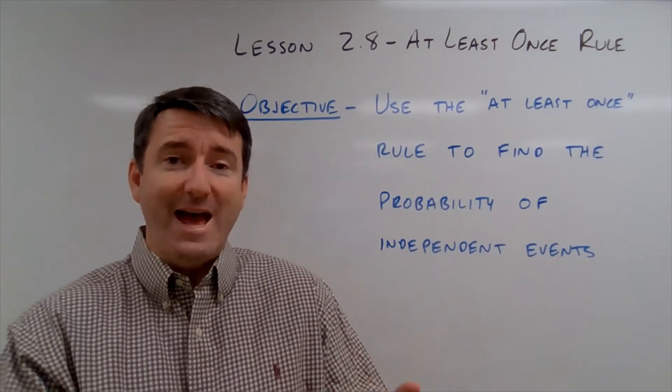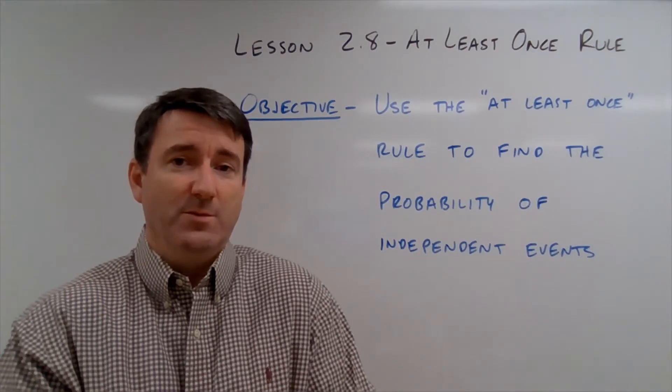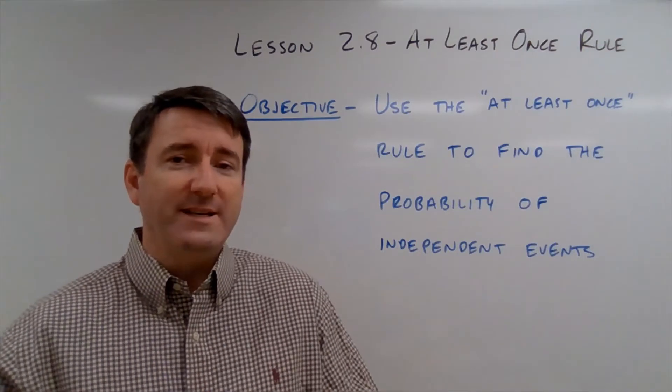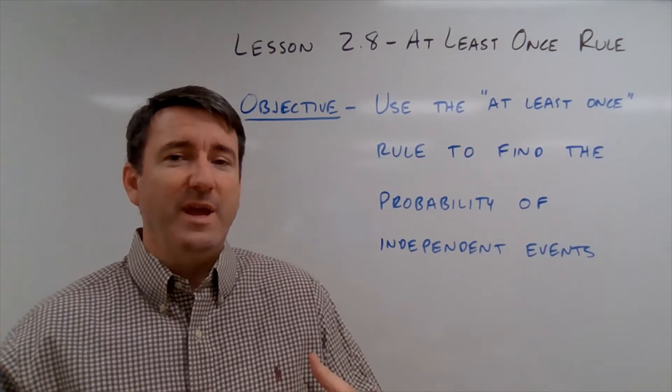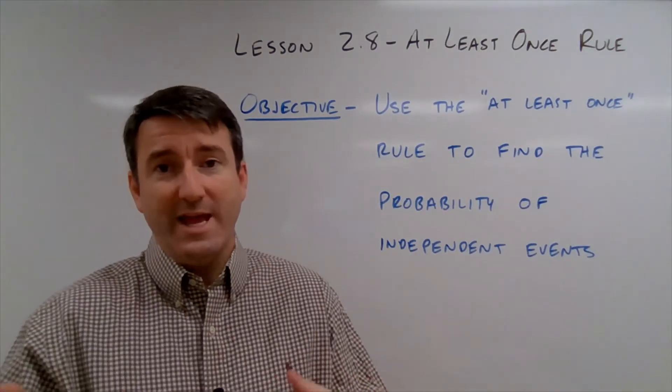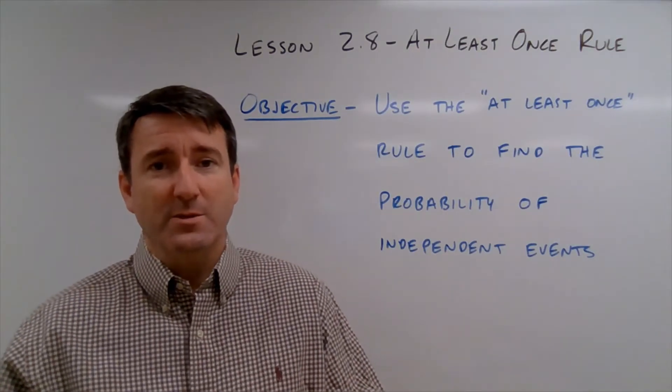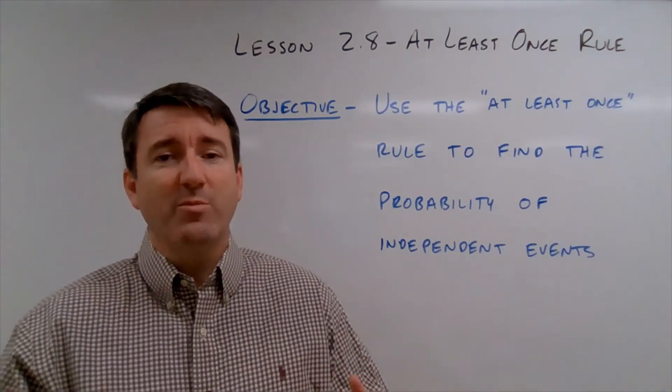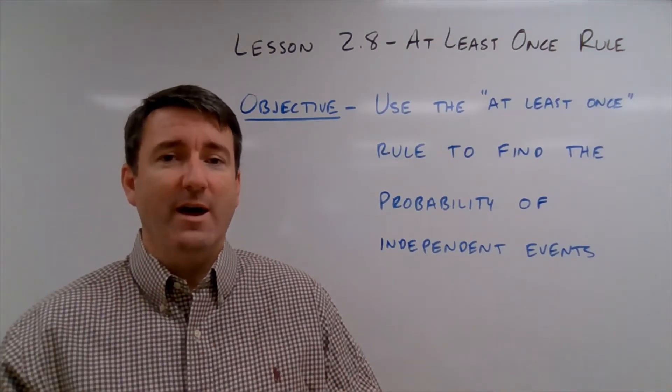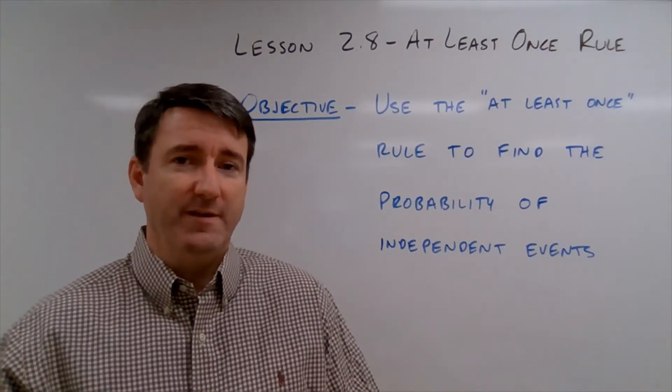Lesson 2.8, the at least once rule. Our objective is to be able to use the at least once rule to find the probability of independent events.